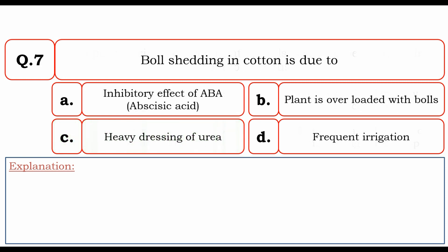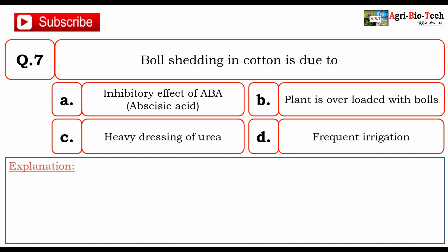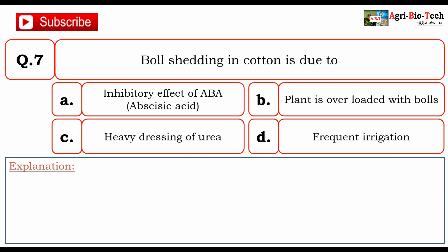Next question: Boll shedding in cotton is due to? The options are A. Inhibitory effect of ABA, B. Plant is overloaded with bolls, C. Heavy dressing of urea, and D. Frequent irrigation.